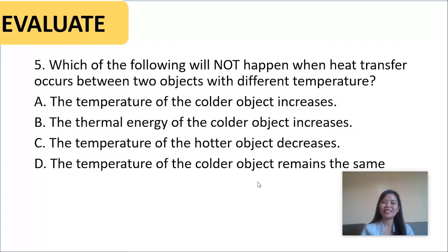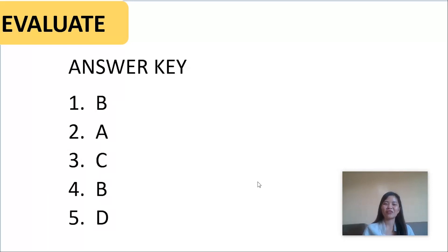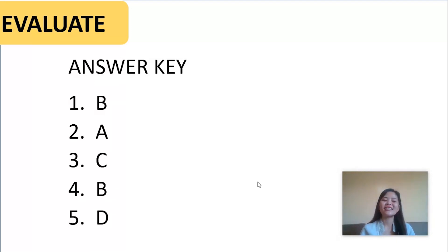Are you ready to know the correct answers? Put a check on each item if you got it correct. Here are the answer keys: number one — B, number two — A, number three — C, number four — B, and number five — D.